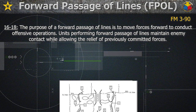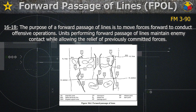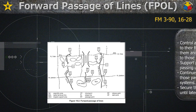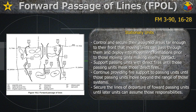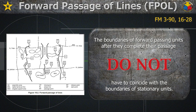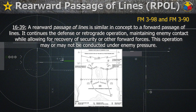The purpose of a forward passage of lines is to move forces forward to conduct operations, ensuring the maintenance of enemy contact while allowing relief of previously committed forces. A rearward passage of lines is similar in concept — it continues the defense or retrograde operation, maintaining enemy contact while allowing for recovery of security or other forward forces. The operation may or may not be conducted under enemy pressure.